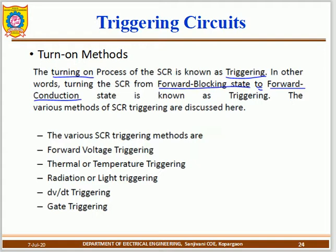The gate terminal acts as a control. When you apply a minimum amount of current to the gate terminal, it will close and permit power to flow from anode to cathode. SCR is a controlled-on, uncontrolled-off device — you cannot turn it off simply by changing the gate-to-cathode power supply.